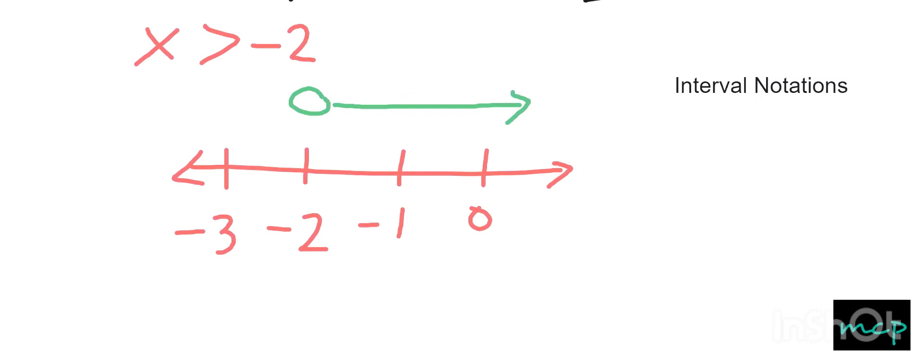So in writing interval notations, we have to start on the left side is the smaller value and on the right side is the bigger value. So since the value is greater than negative 2 and negative 2 is not included, so we need just to use a parenthesis for that.